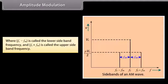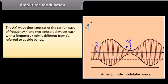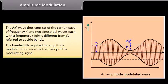Here, Fc − Fm is called the lower sideband frequency and Fc + Fm is called the upper sideband frequency. The AM wave thus consists of the carrier wave of frequency Fc and two sinusoidal waves each with a frequency slightly different from Fc, referred to as sidebands. The bandwidth required for amplitude modulation is twice the frequency of the modulating signal.